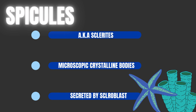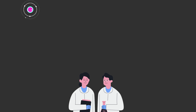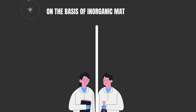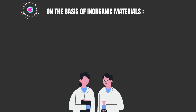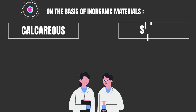All spicules have an axial core of organic matter surrounded by a number of layers of inorganic substance. On the basis of inorganic material, spicules are of two types: calcareous spicules and siliceous spicules.